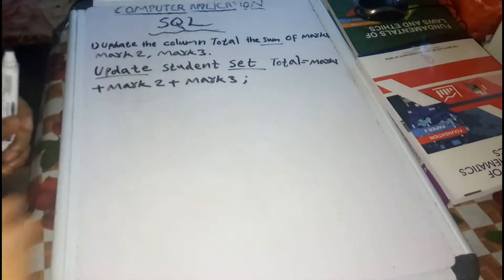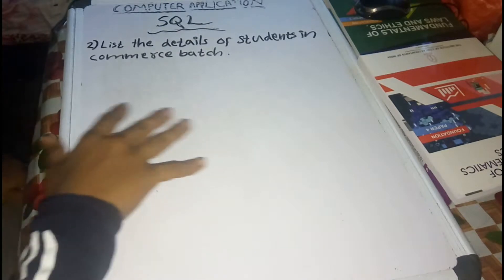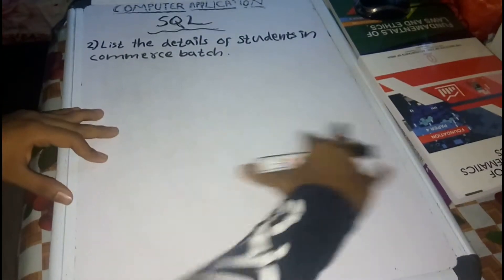Here is the last question. List the details two times — this is Commerce Batch. So we have Commerce Batch. It's a detail. If you did, you can't find it. So if you want to find the Commerce Batch, you can find it.